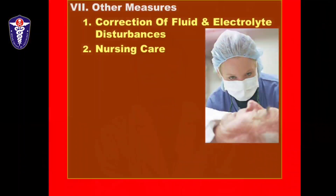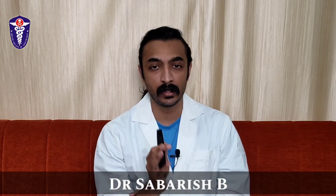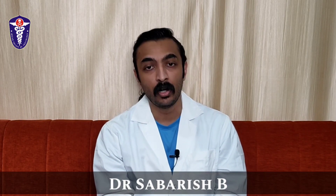Always remember adjuvant measures including correction of fluid and electrolyte disturbances and other supportive and nursing care. That was a quick overview of the general management of the poisoning patient. In the next session we will discuss in detail the general management of poisoning with specifics on decontamination, including emesis, gastric lavage, activated charcoal, forced diuresis, catharsis, hemodialysis, hemoperfusion, and exchange transfusion. Special thanks to VUPLAYSER for the PowerPoint and to the academic team of IST.